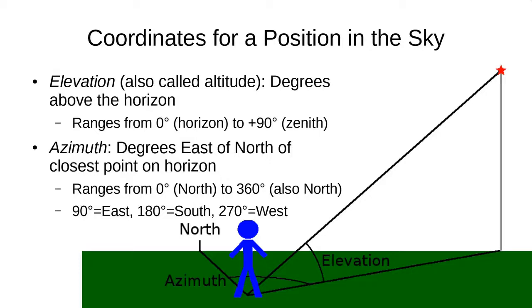So, how do we measure the positions of stars in the sky? We use the coordinate system called elevation and azimuth. Elevation is degrees above the horizon going from 0 to 90, and azimuth is degrees east of north from the closest point on the horizon. So, with these two values, we can identify any position in the sky above a given location.